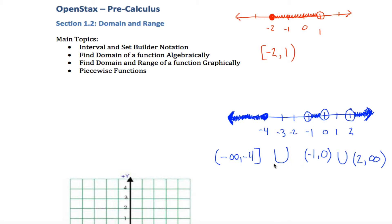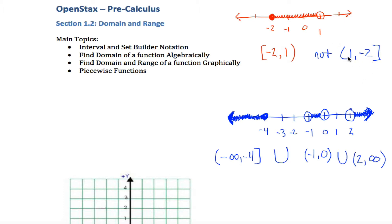A couple more comments on interval notation. The interval negative one comma zero looks a lot like a point — an ordered pair — so it's important to provide context so the reader understands what you mean. Fortunately it'll typically be pretty obvious. Also, be careful with the order: you always write the lower bound first, then the upper bound. You could not write one comma negative two — the standard is always starting with the lower endpoint, which is negative two.